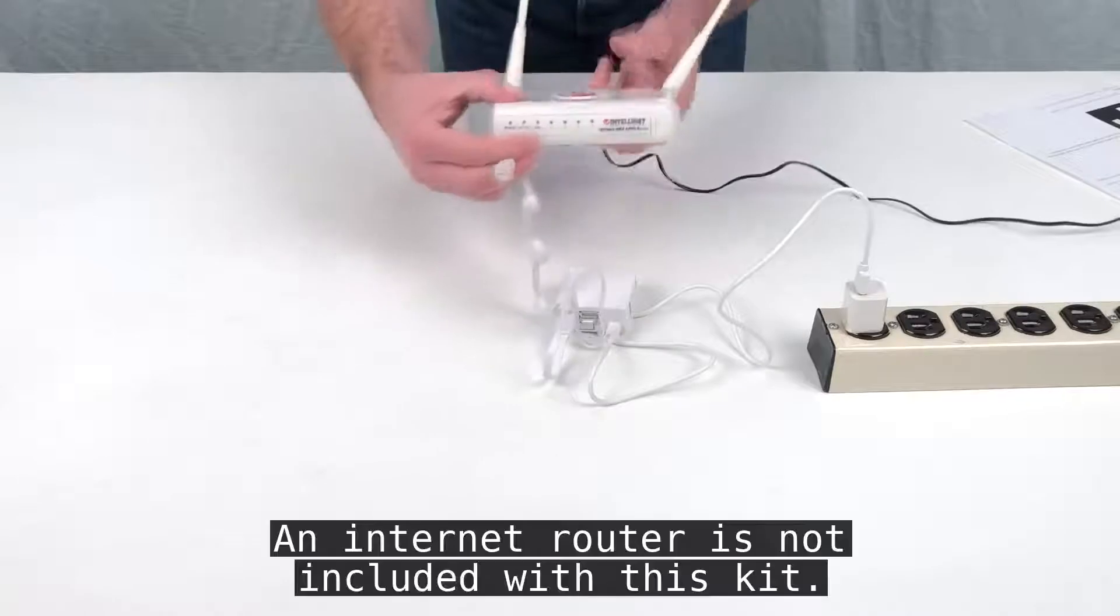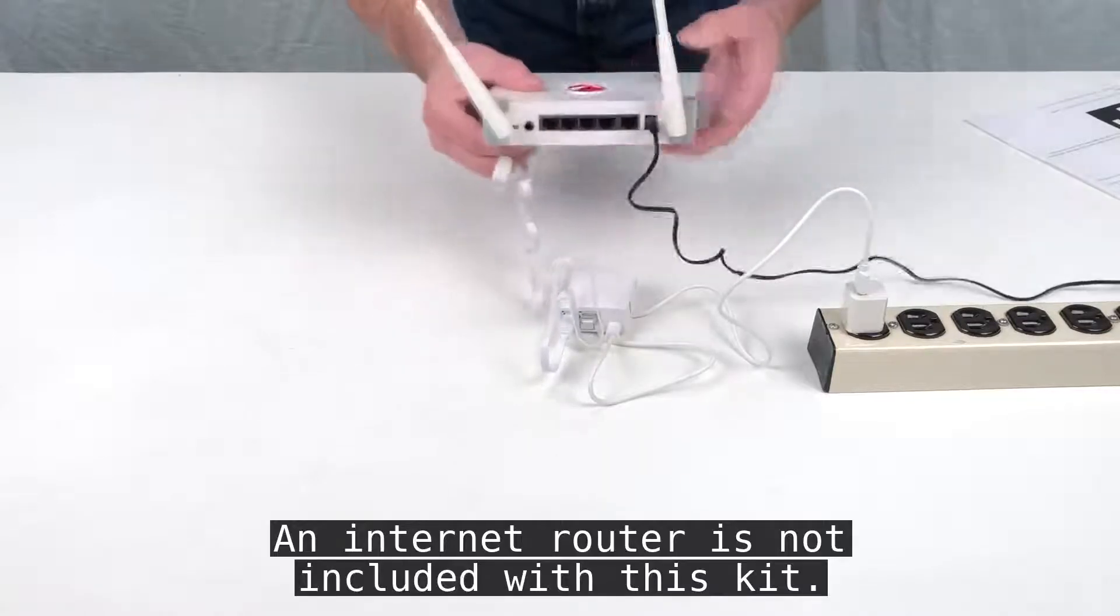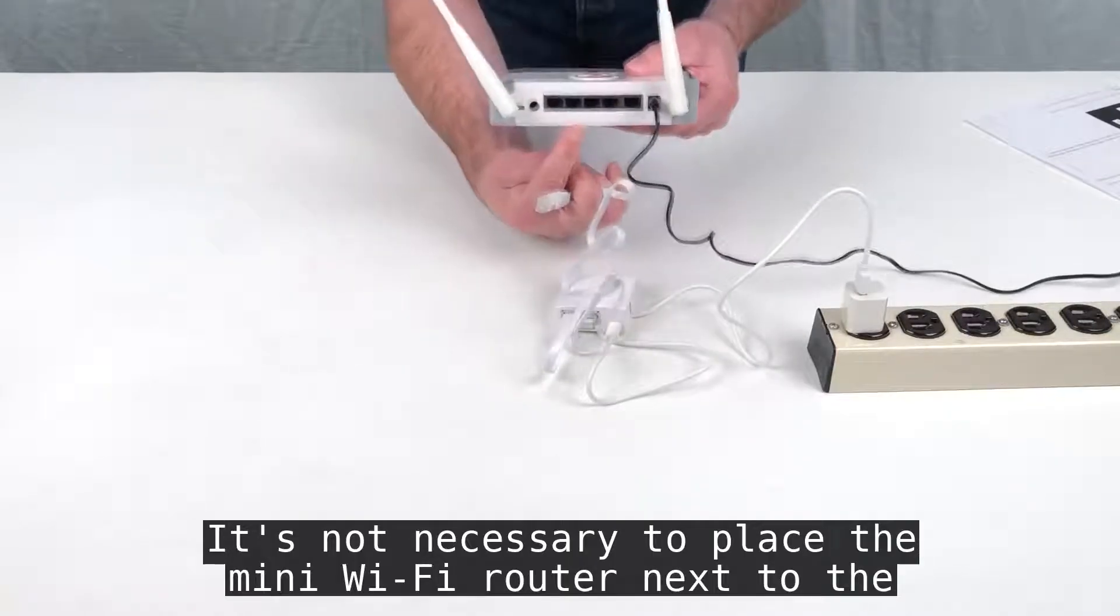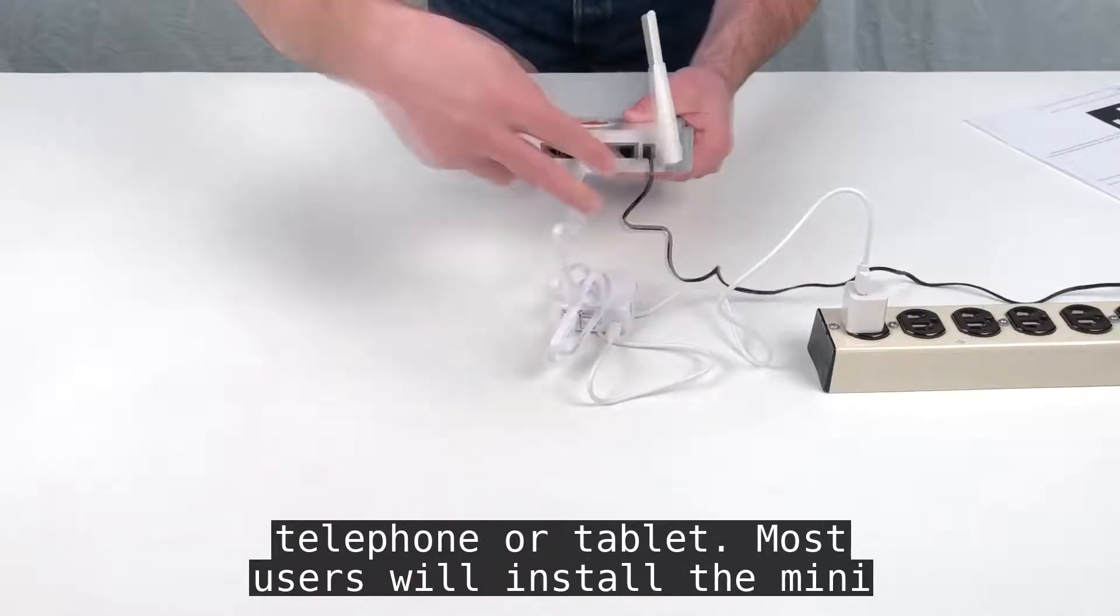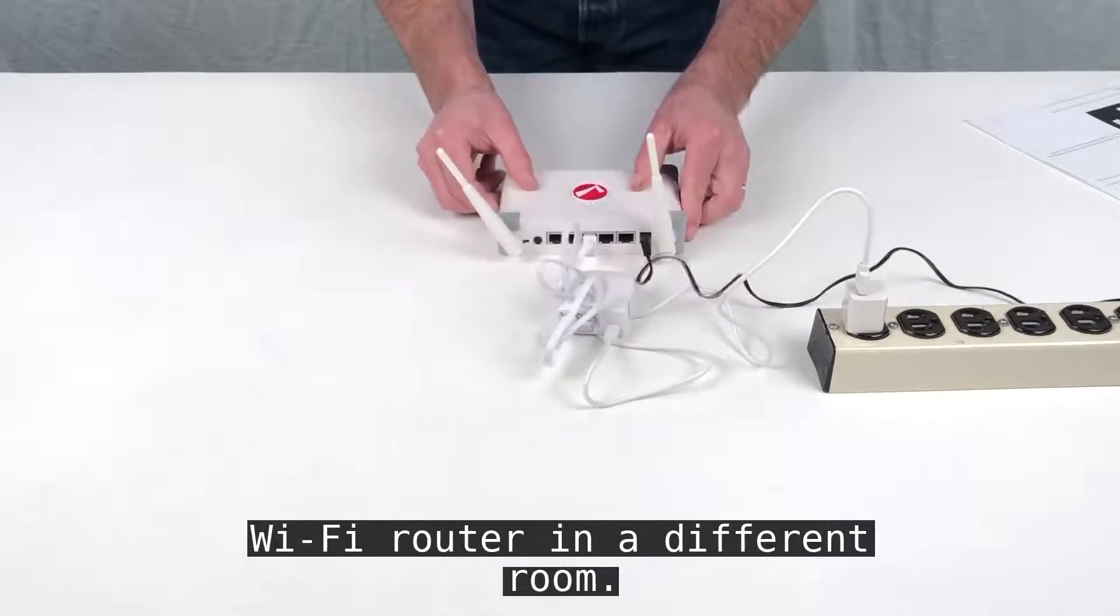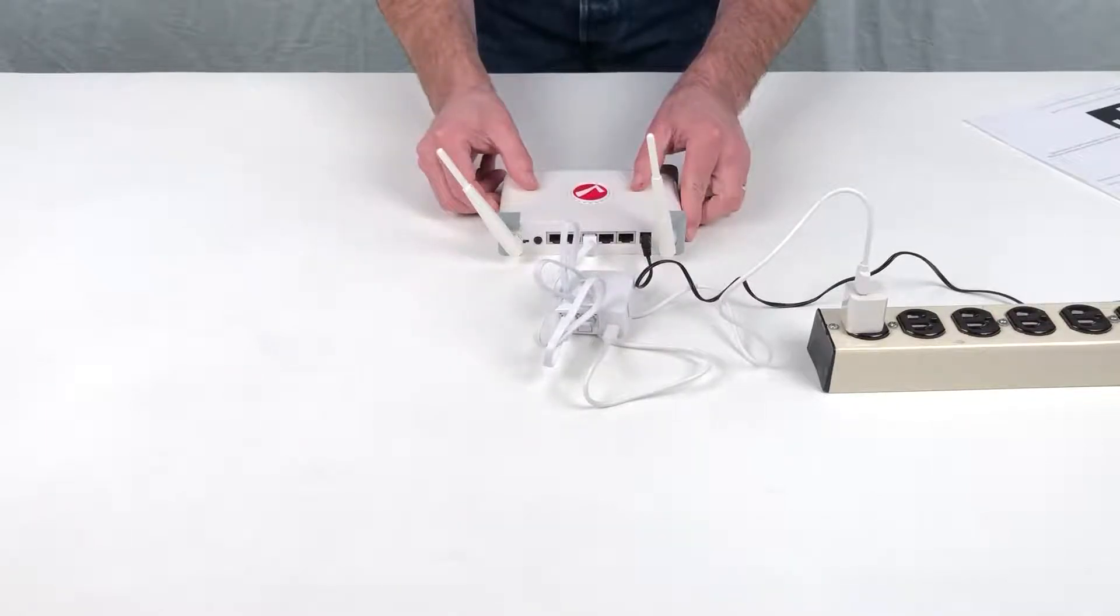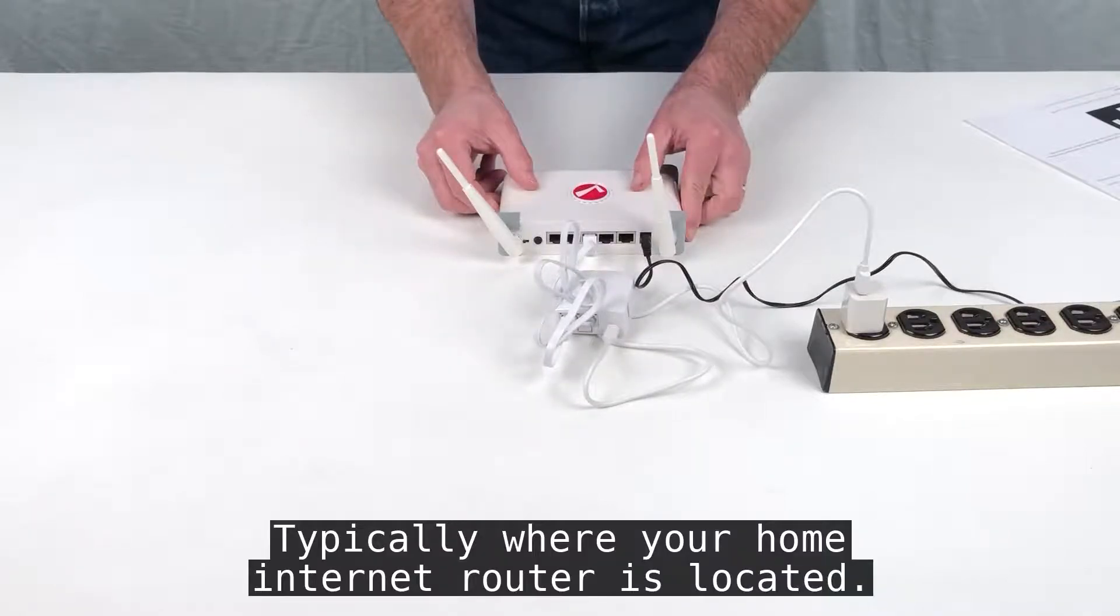Note: An Internet Router is not included with this kit. It's not necessary to place the Mini Wi-Fi Router next to the telephone or tablet. Most users will install it in a different room, typically where your home Internet Router is located.